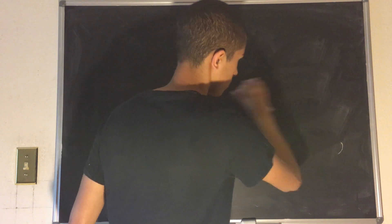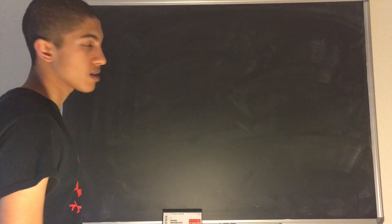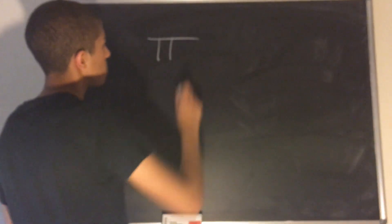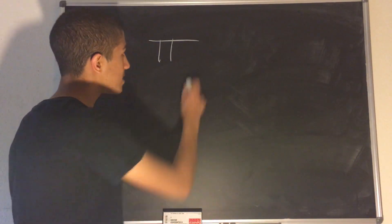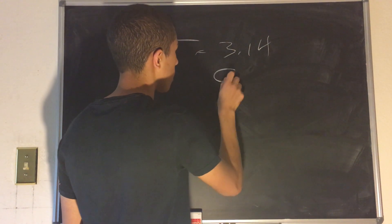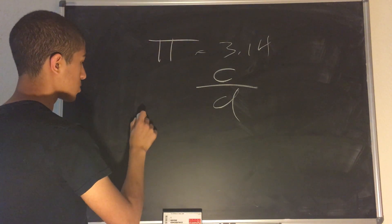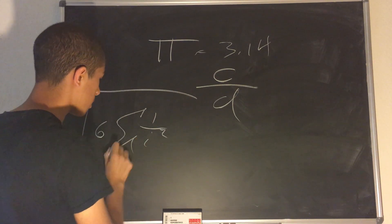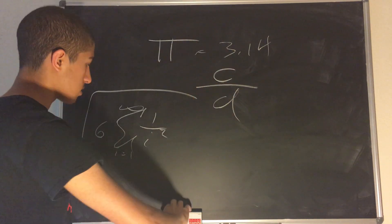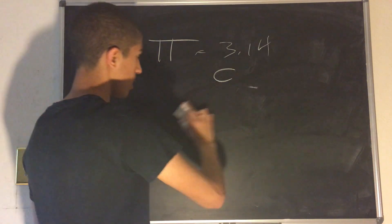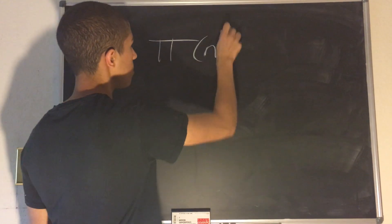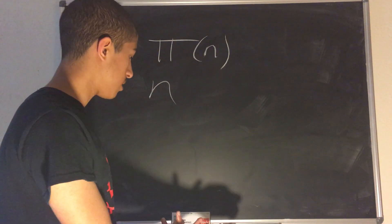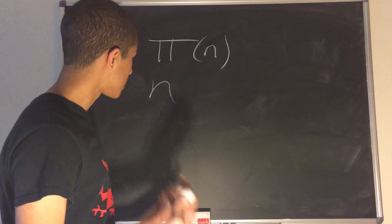Next we have many other arithmetic functions, one of which is π. And π, when you hear it, always brings to mind 3.14 — the circumference over the diameter. But π in this sense is not the number pi, but the function π. π(n) takes some number n and counts the number of prime numbers less than or equal to n.